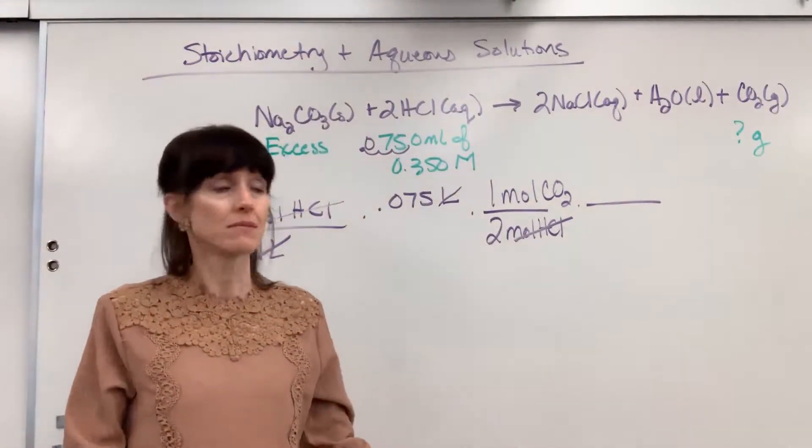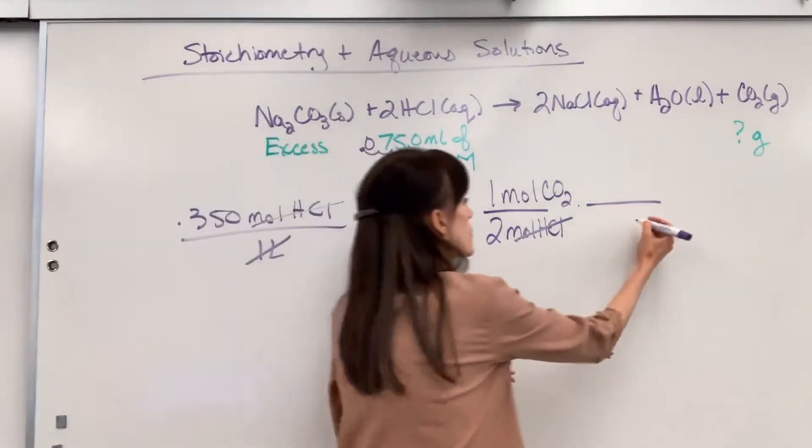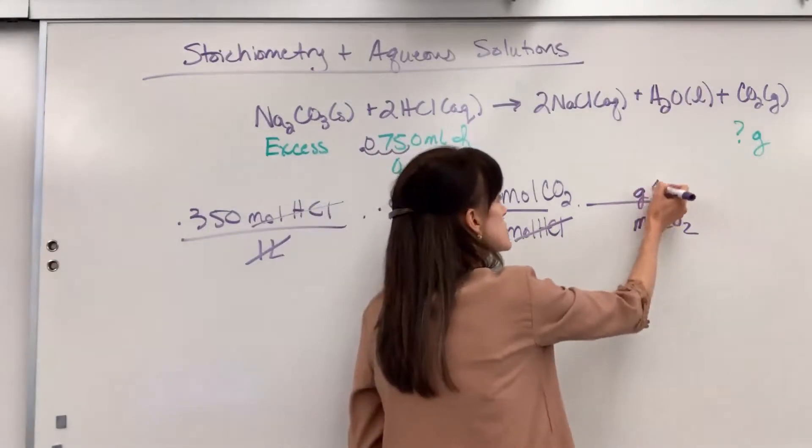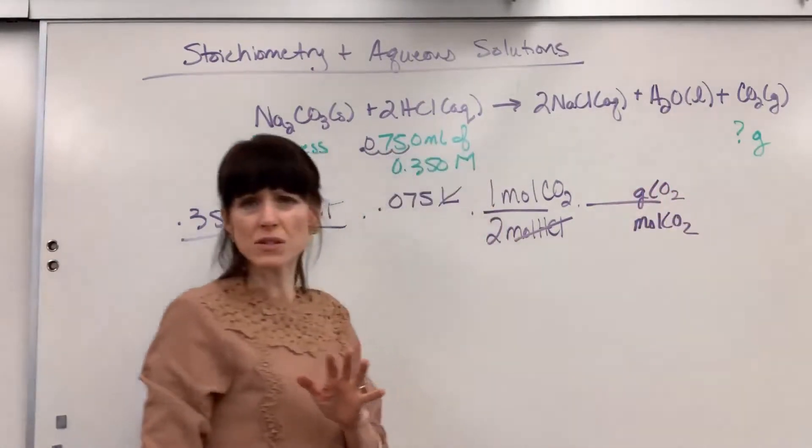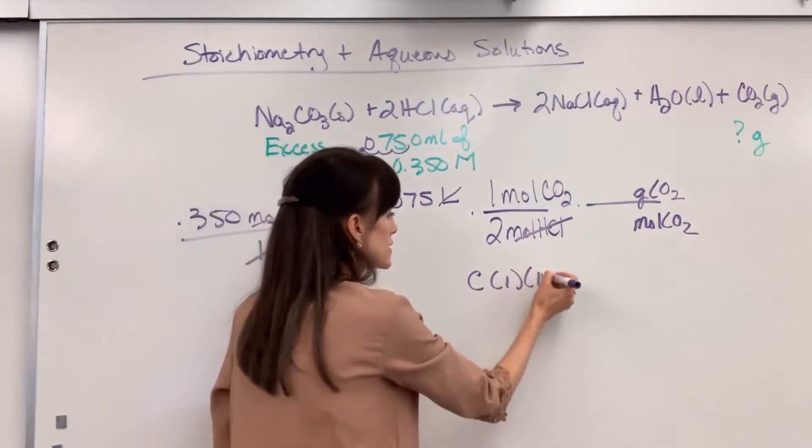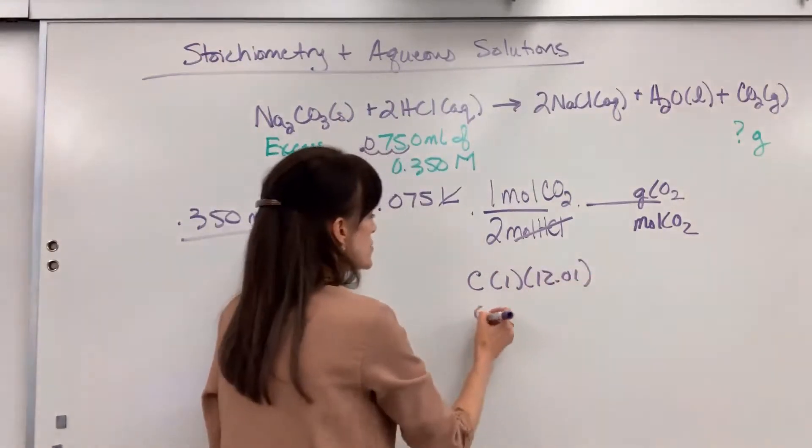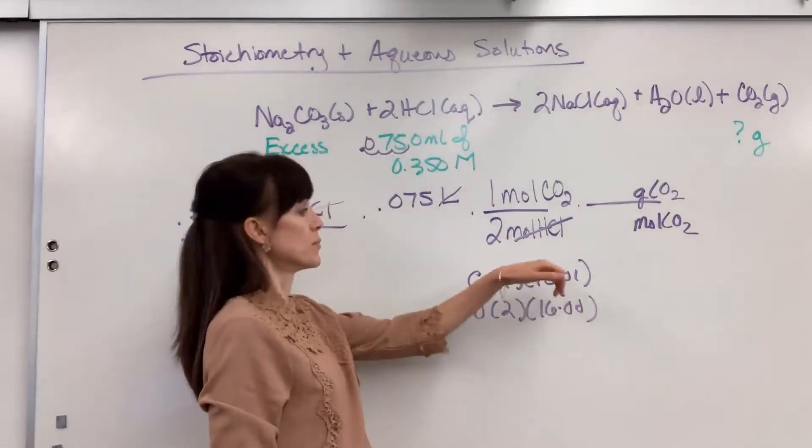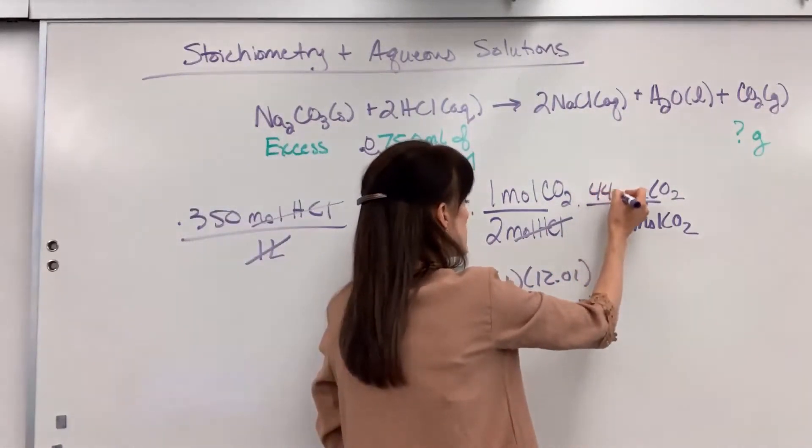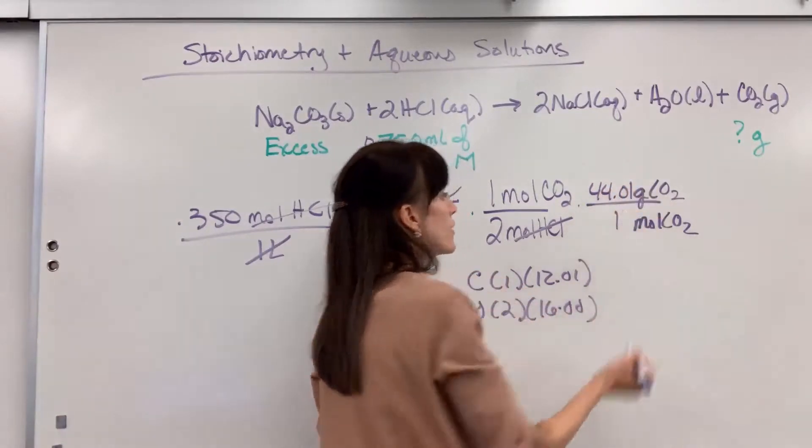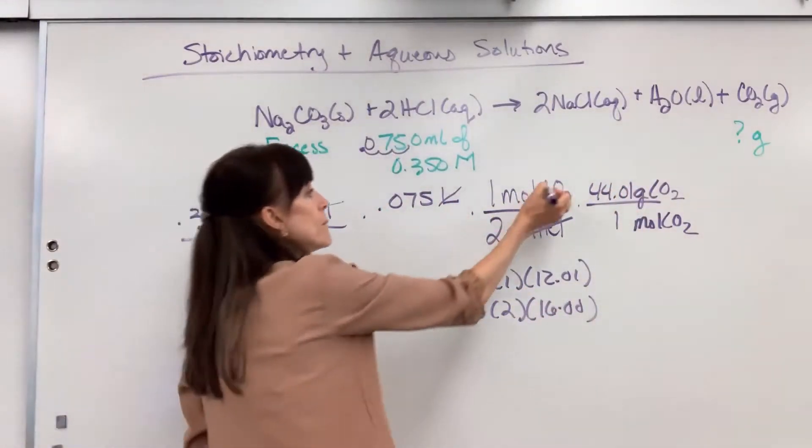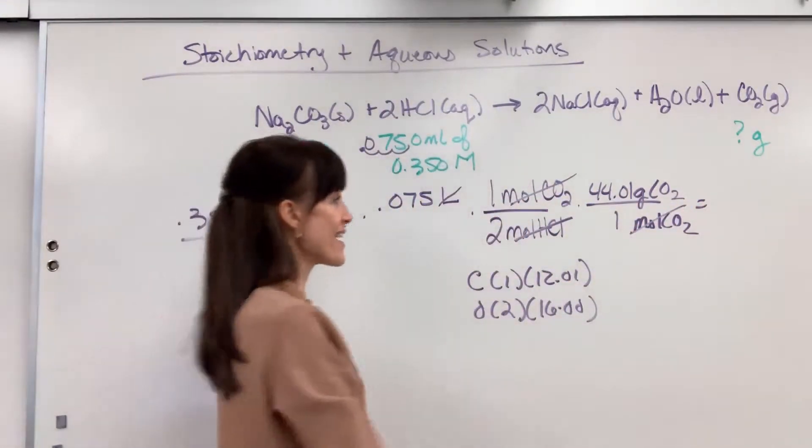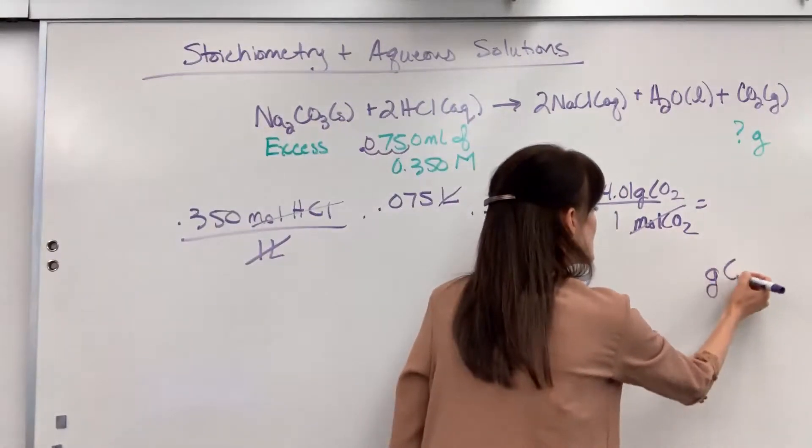And they want to know grams. Easy. We use molar mass. I'm going to put mole of CO2 in the denominator and then grams of CO2. Let's do this quickly together. We've got one carbon is 12.01. Two oxygens times 16, it's going to be 32 plus 12 gives us 44.01 grams for every one mole of CO2. Mole of CO2 will cancel. And look what we're left with. Hooray! Grams of CO2.